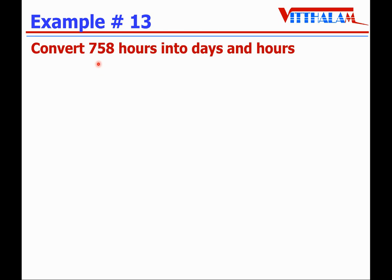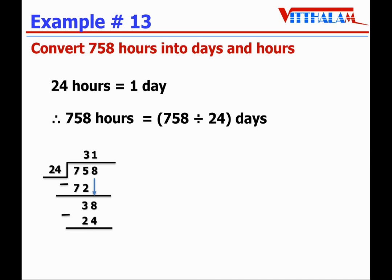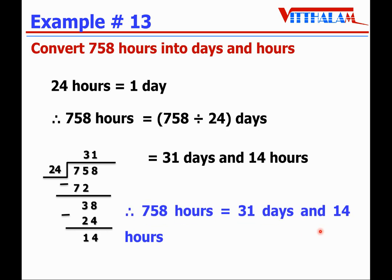Convert 758 hours into days and hours. We know 24 hours equals one day, therefore 758 divided by 24. Taking the first two digits: 24 times 3 is 72; 75 minus 72 is 3. Bring down the 8: 38 divided by 24 — 24 times 1 is 24; 38 minus 24 is 14. The quotient is 31 days and the remainder is 14 hours. Therefore 758 hours equals 31 days and 14 hours.